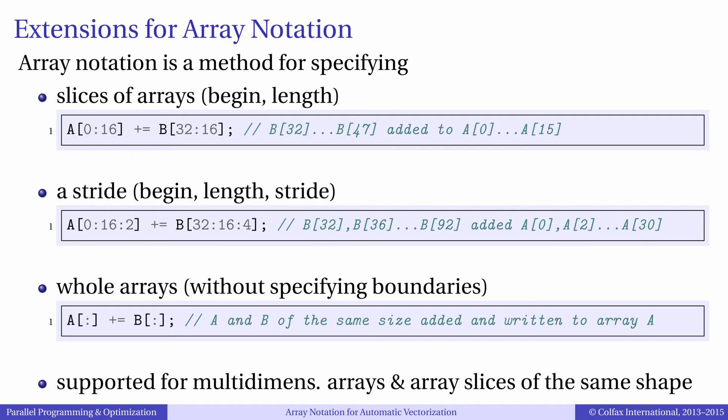As you can see, here we express a slice of array a as 0:16, which means 16 elements starting from index 0. For array b, 32:16 means 16 elements starting from index 32.